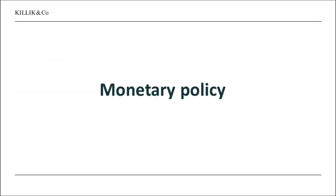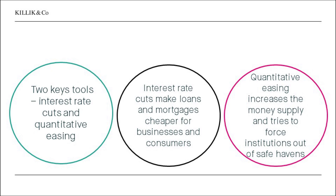Well, monetary policy first of all. Monetary policy measures have been around some time. The key tools of monetary policy are interest rate cuts and quantitative easing, and these are not new. Interest rate cuts are as old as the hills as a tool. Quantitative easing came in around the time of the financial crisis. Essentially, interest rate cuts are designed to make loans and mortgages cheaper for businesses and consumers. The idea is you encourage people to borrow by making the cost of that borrowing lower as a proportion of their salary or as a proportion of their profits.